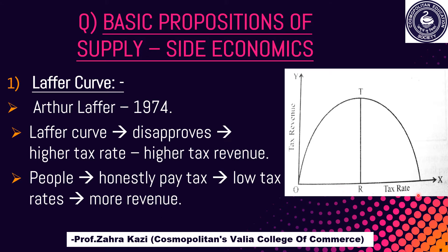In the diagram, the tax rate is plotted on the x-axis while the tax revenue is plotted on the y-axis. As the tax rate increases, the level of tax revenue also goes on increasing, but only up to a point. Beyond this point, the tax revenue declines even though the tax rate goes on increasing. At tax rate R, the tax revenue is maximum, shown by RT. After this, any further increase in tax rate will only bring a reduction in revenue.